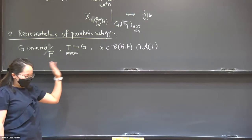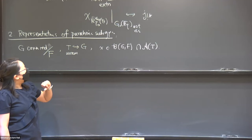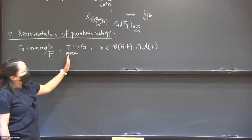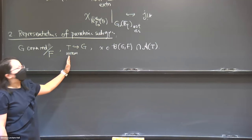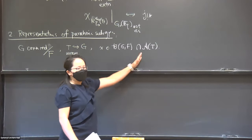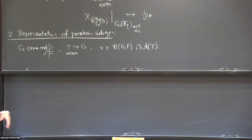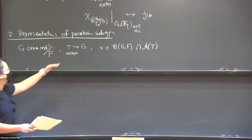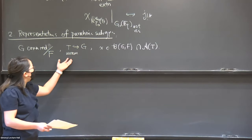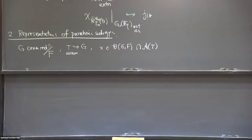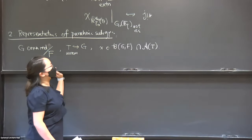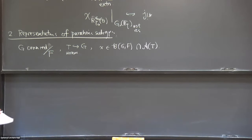From this unramified maximal torus, I choose a point in the building — an F-rational point in the apartment associated to this torus. In the case related to supercuspidals, this torus is chosen to be elliptic. In that elliptic case, this intersection contains just one point. But a priori, for a non-elliptic torus, you have many choices for what this point can be. Unramified means it splits over an unramified extension.